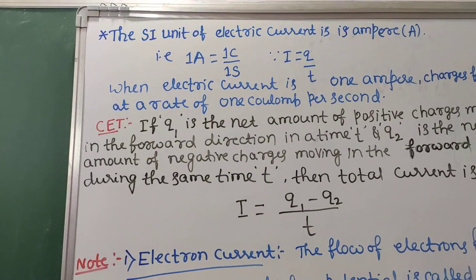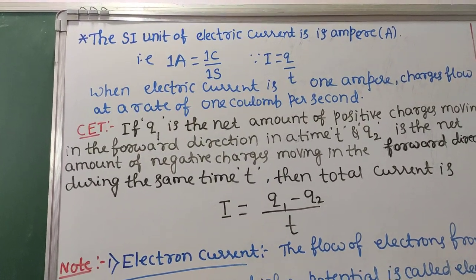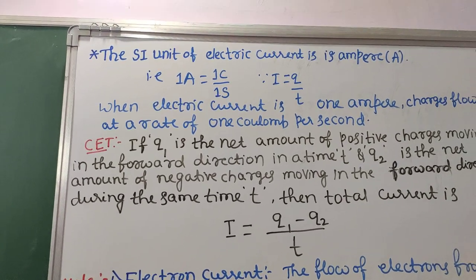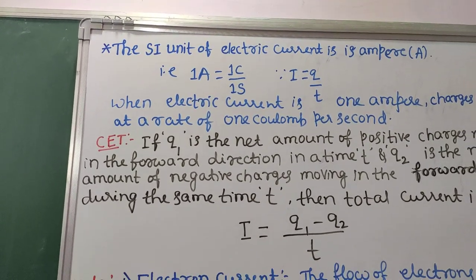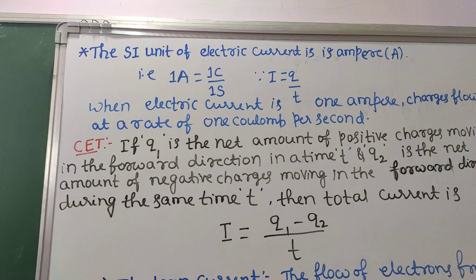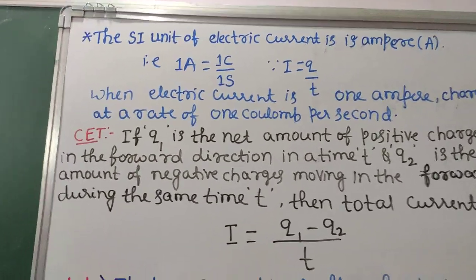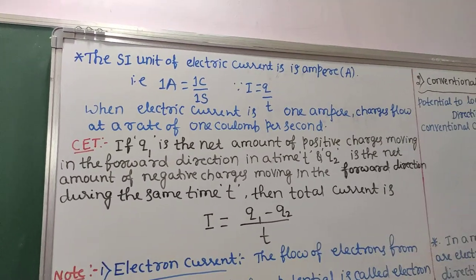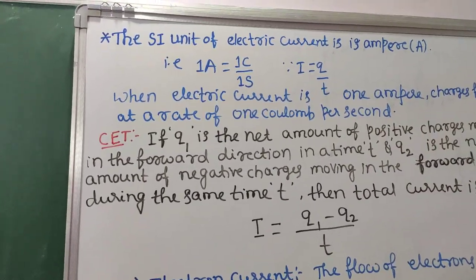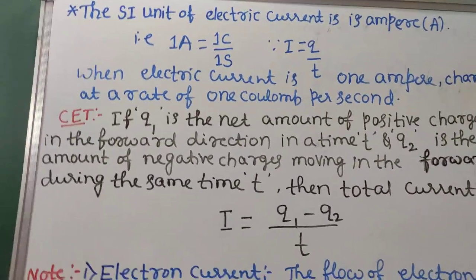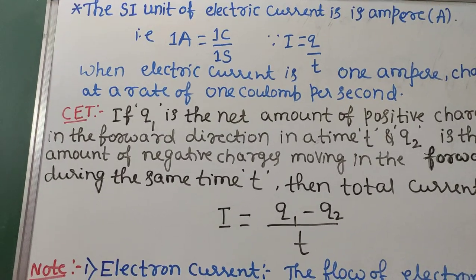Last class we discussed the definition of electric current: I is equal to Q by T. Now we will go for its SI unit. The SI unit of electric current is ampere, that is capital A. 1 ampere is equal to 1 coulomb per second.